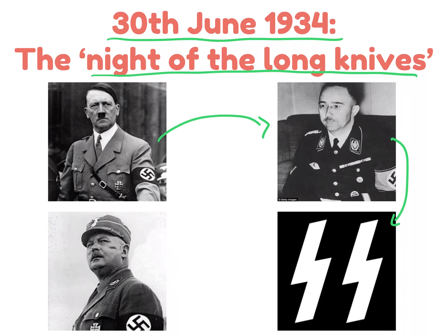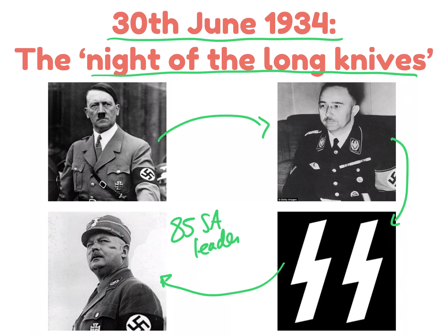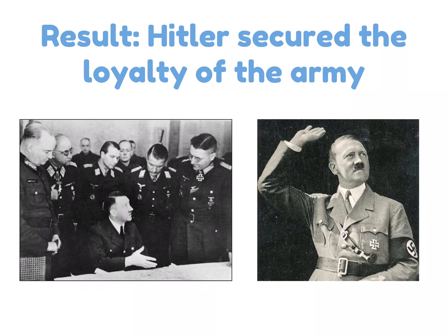The SS were people totally obedient to Adolf Hitler who would do anything he wanted. On this night the SS arrested the SA leaders and killed 85 of them, including leaders of other political parties. This enabled Hitler to eliminate any external opposition, and the result was that Hitler was able to secure the loyalty of the army. The threat from the powerful SA had been reduced.